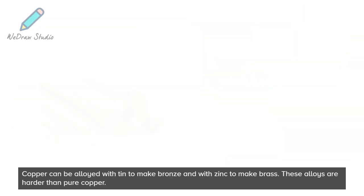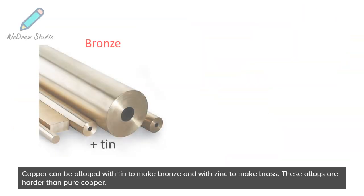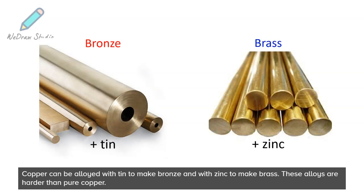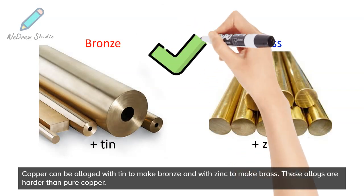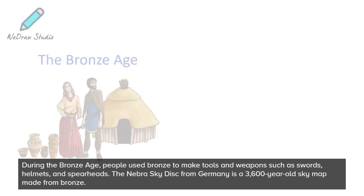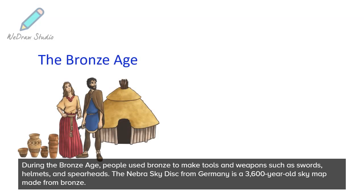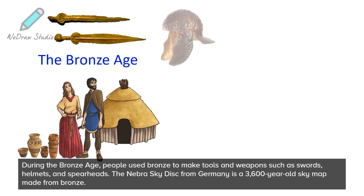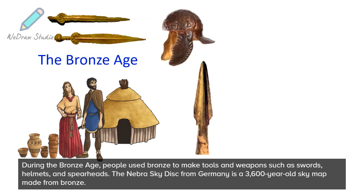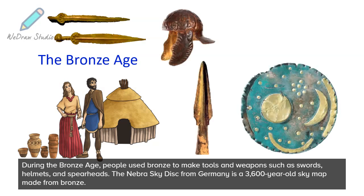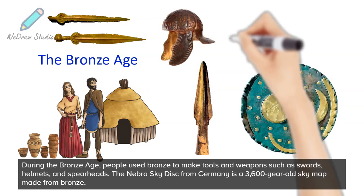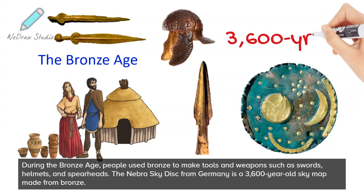Copper can be alloyed with tin to make bronze and with zinc to make brass. These alloys are harder than pure copper. During the Bronze Age, people used bronze to make tools and weapons such as swords, helmets, and spearheads. The Nebra Sky Disk from Germany is a 3,600-year-old sky map made from bronze.